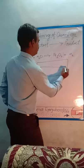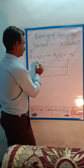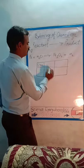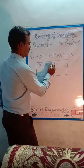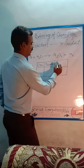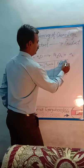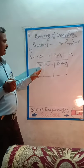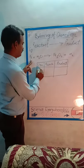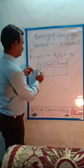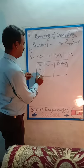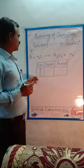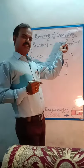In the table, on the left side write the elements, then in one column write reactant and another column write product. The elements are iron, hydrogen, and oxygen — three types of elements present in both reactants and products.